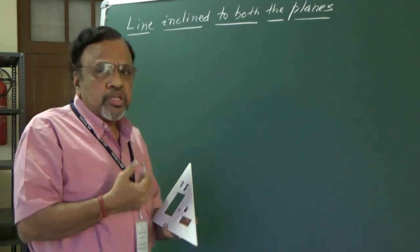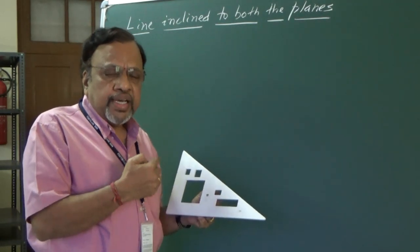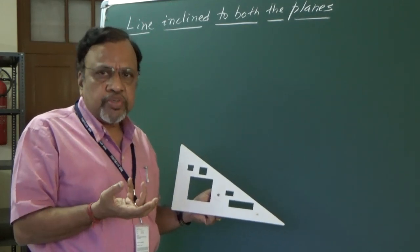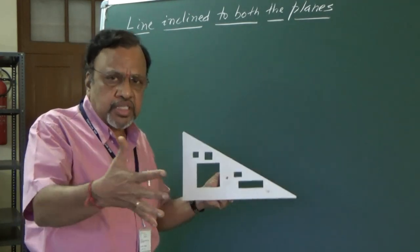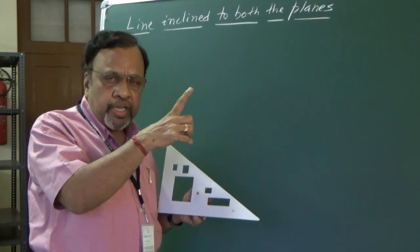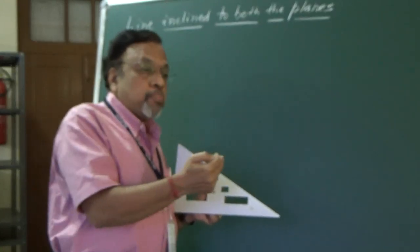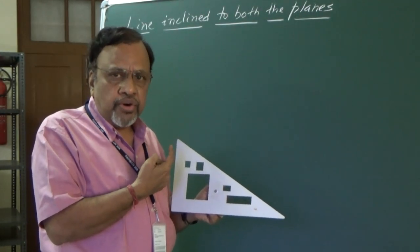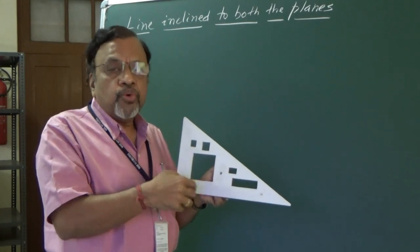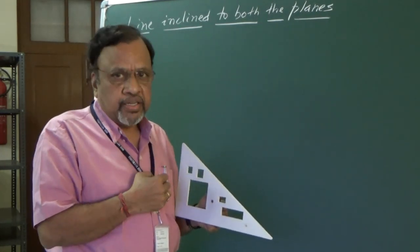Today I want to start with a line inclined to both planes. When a line is inclined to HP and parallel to VP, its true length is seen in the front view with true inclination theta. Since the line is inclined to HP, its top view is foreshortened, and that length — the length of the top view — is parallel to the XY line.